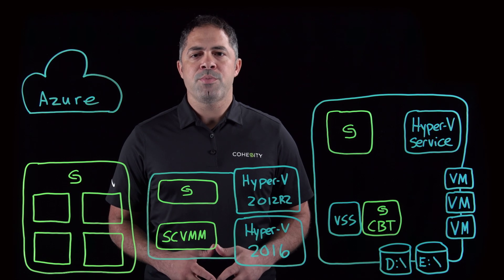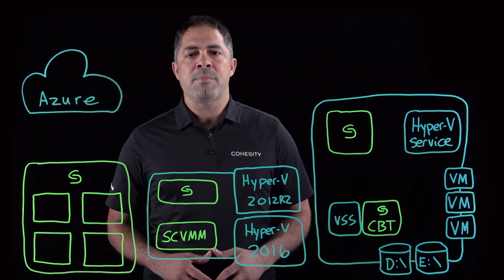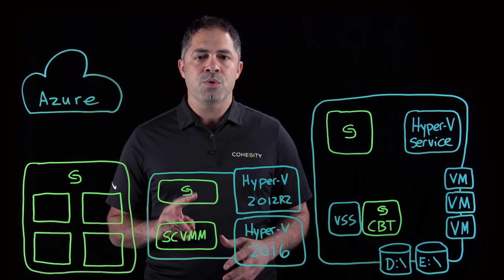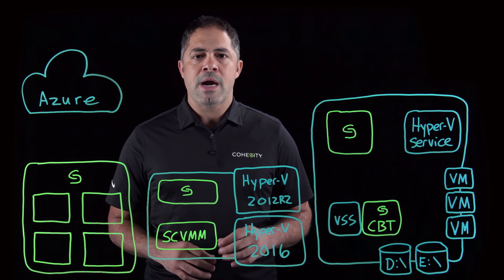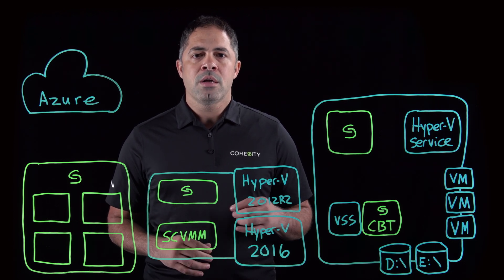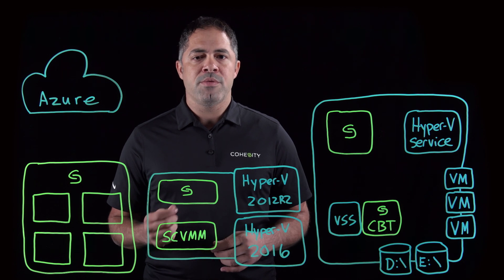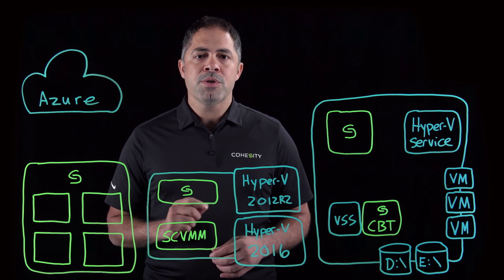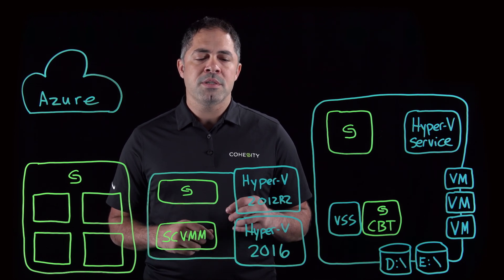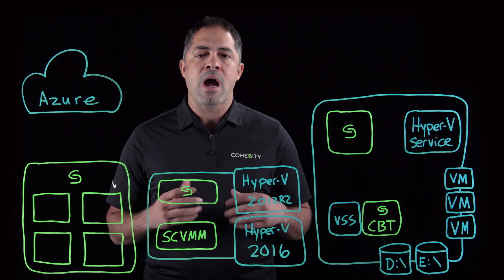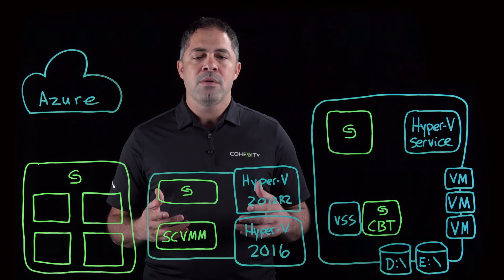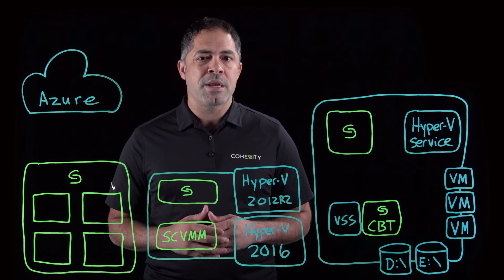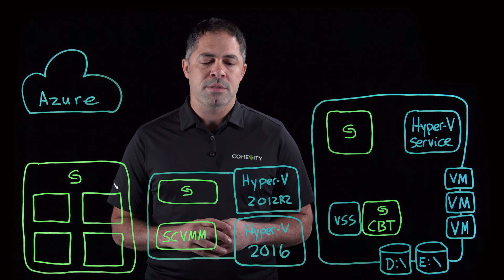Cohesity now provides support for Microsoft Hyper-V virtualization platform, and specifically we do it for two versions: Hyper-V 2012 R2 and Hyper-V 2016. It's important to highlight the differences in the implementation details of how we achieve that for the two different versions, and I'd like to highlight and show you some of those things.